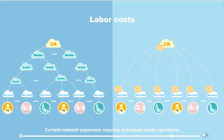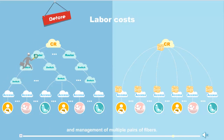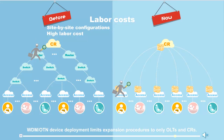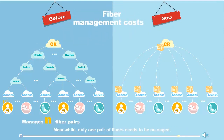Current network expansion requires individual on-site operations and management of multiple pairs of fibers. WDM and OTN device deployment limits expansion procedures to only ONTs and core routers, while only one pair of fibers needs to be managed, greatly reducing fiber maintenance workload. WDM and OTN intelligent O&M solutions support remote fault diagnosis, online network inspection, and automatic network optimization, helping to greatly reduce O&M costs. Better user experience, lower costs, and larger bandwidth are the forces driving network simplification — is your network ready for 4K?